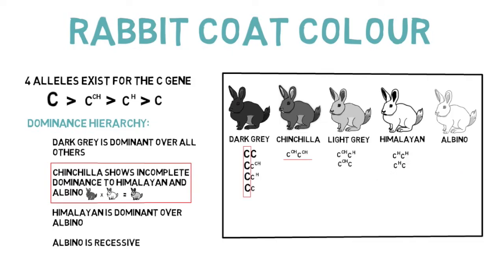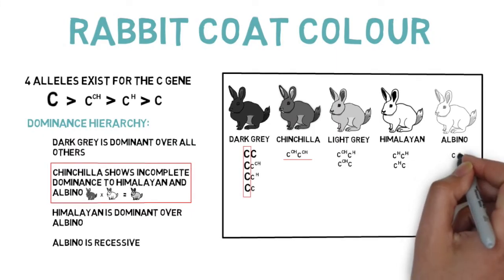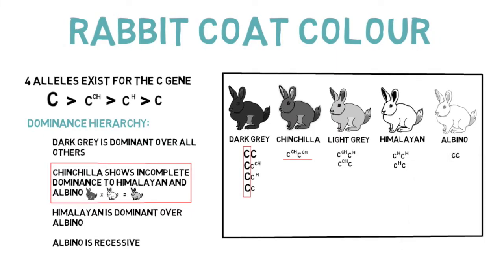Remember, the albino rabbit is recessive, so there is only one possible genotype for it: lowercase c, lowercase c.